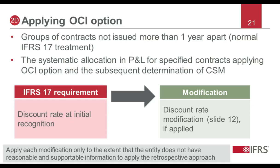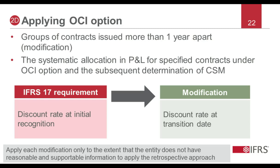This slide highlights modifications applicable when an entity includes in the group contracts issued more than a year apart. In this case, the entity does not have reasonable and supportable information to group contracts issued no more than a year apart. If the entity chooses to disaggregate insurance finance income or expenses between profit and loss and OCI, the amount presented in profit and loss is determined using a systematic allocation — for example, using the discount rate at initial recognition. The modification provided is that the entity is permitted to apply the discount rate at the date of transition to determine the amounts presented as insurance finance income or expenses in profit and loss going forward.